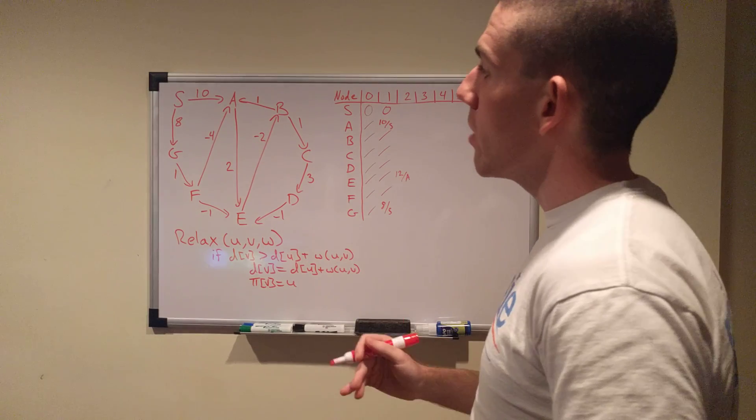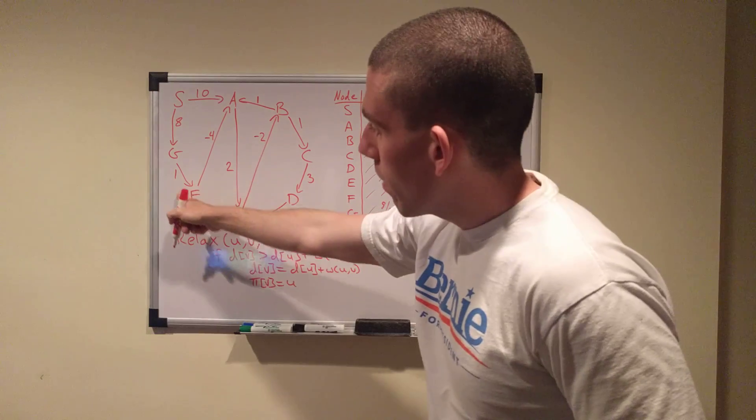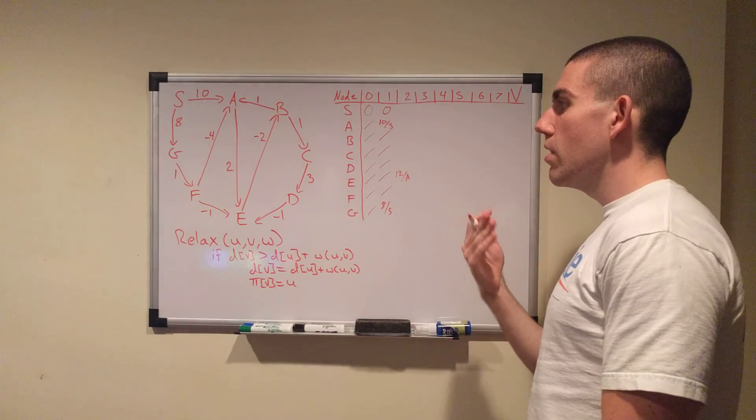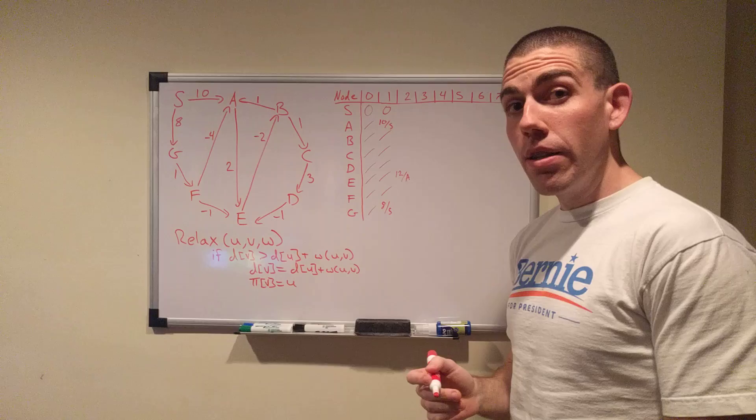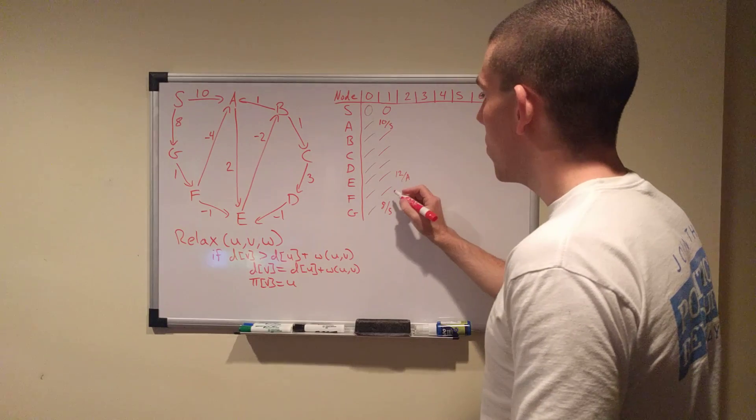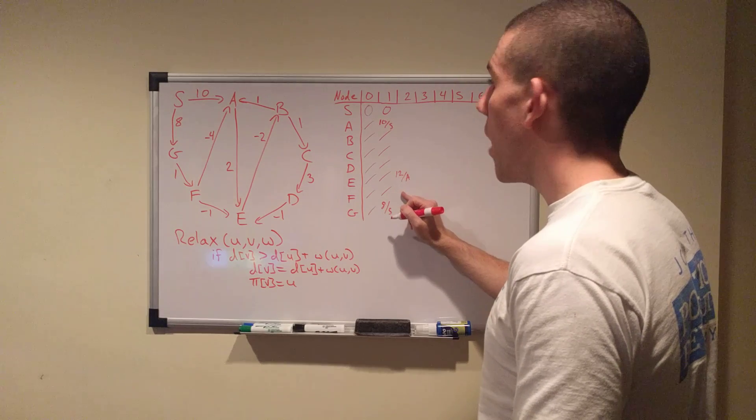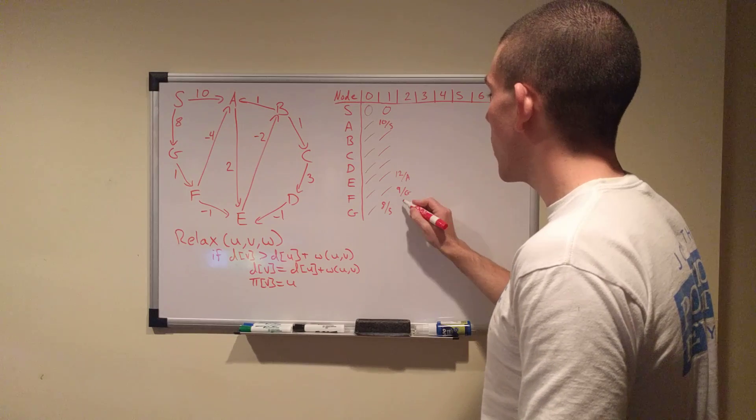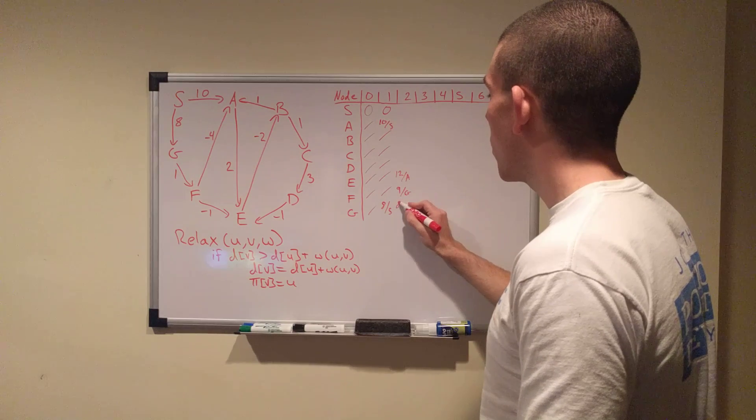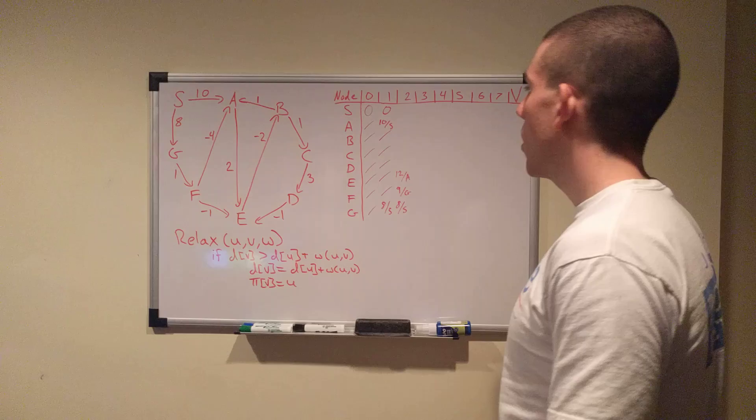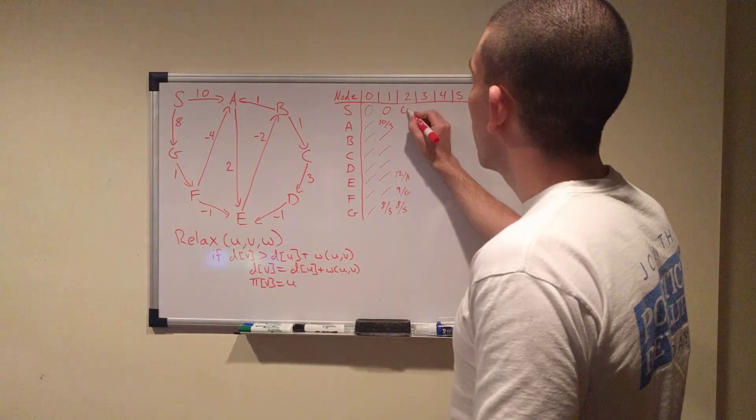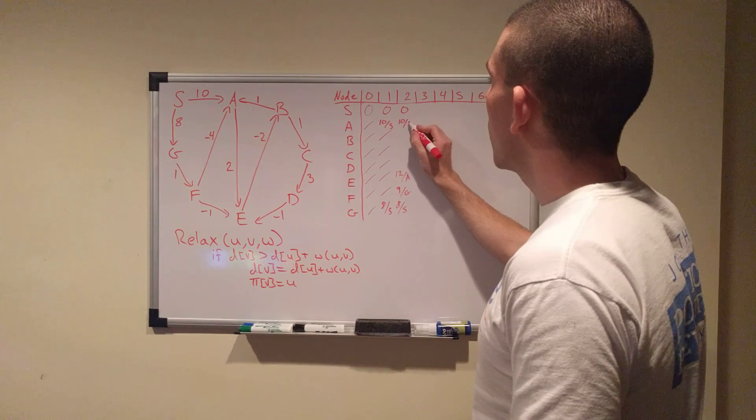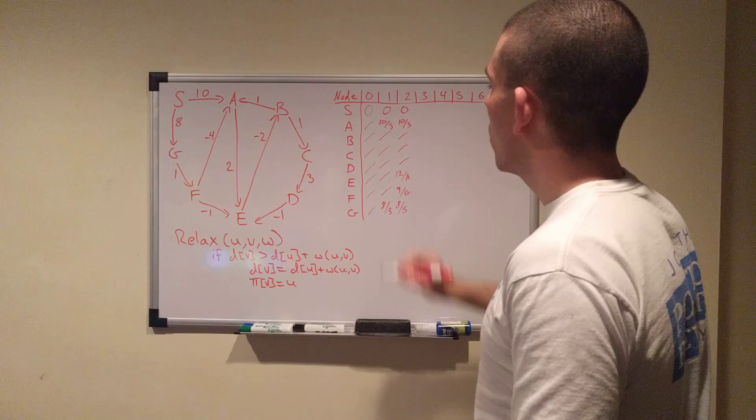G, we have data on it. We can get to G at a cost of 8. G has one outgoing edge to F at a cost of 1. Is infinity greater than 8 plus 1? Yes. So, we're going to update F with a cost of 9 coming from G, and G won't change. So, in the second iteration, we end up with that.